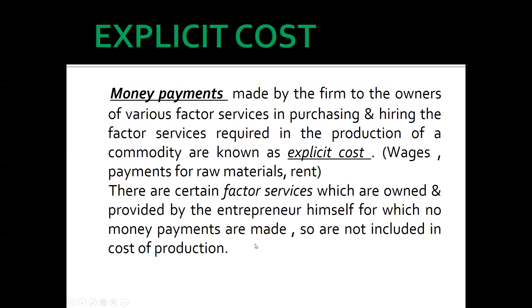Explicit cost means money payments made by the firm to the owners of various factor services in purchasing and hiring. The factor services required in the production of a commodity are known as explicit cost — like when the company is paying in terms of wages, payments for raw materials, rent, etc. This is the actual payment that would be reflected on the balance sheet and in accounting.